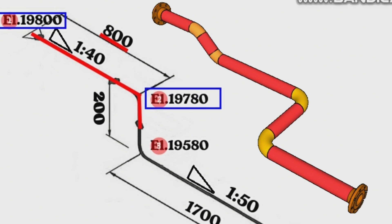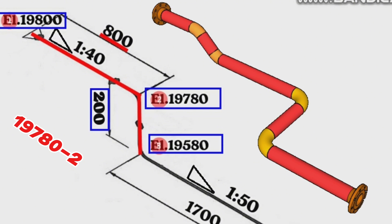Then the pipeline continues downward for a length of 200 millimeters. The height elevation of this point is 19,580 millimeters. We can easily verify this: 19,780 millimeters minus 200 millimeters equals 19,580 millimeters.